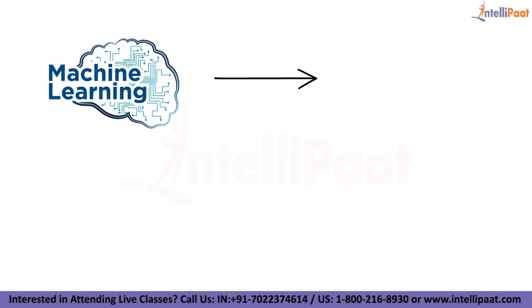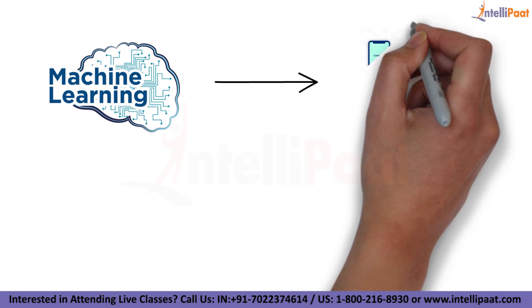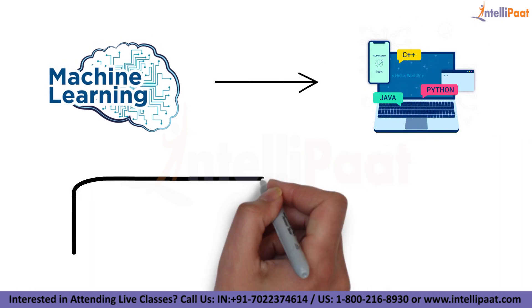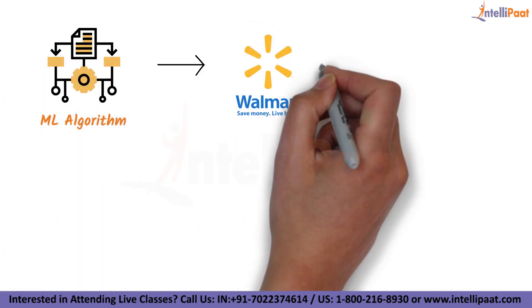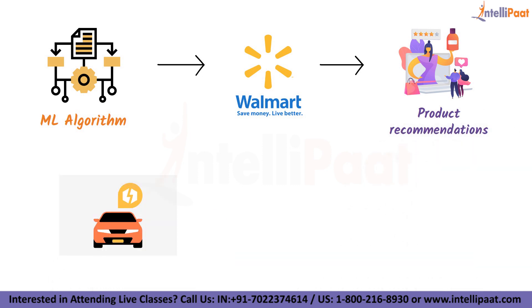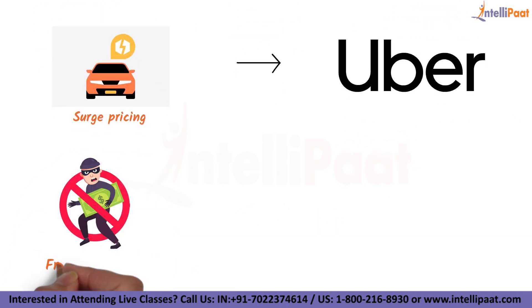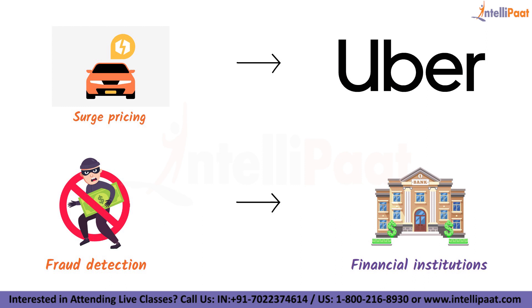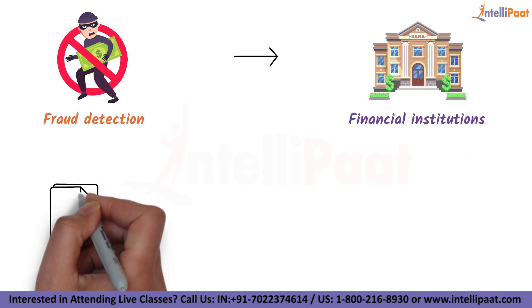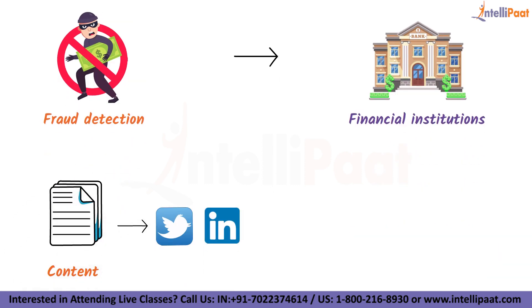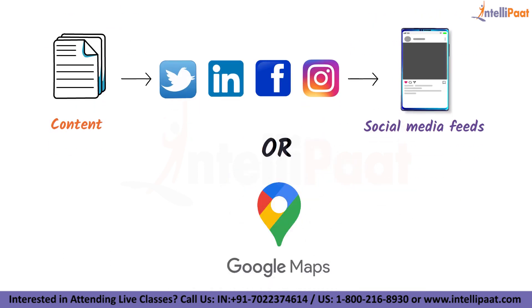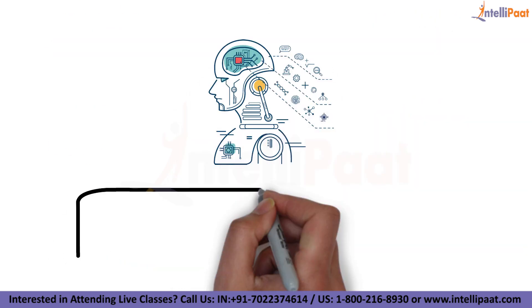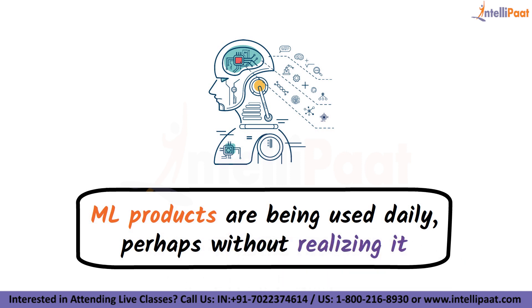Machine learning was just considered to be a niche subfield of computer science, but technology giants have been using it for years. Machine learning algorithms power Walmart product recommendations, surge pricing at Uber, fraud detection at top financial institutions, and content that Twitter, LinkedIn, and Facebook display on social media feeds, or Google Maps. Machine learning products are being used daily, perhaps without any realization.